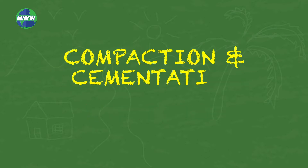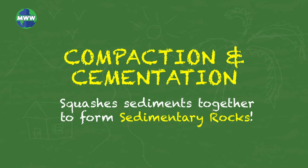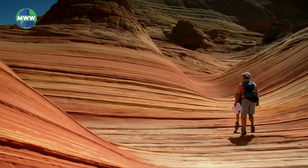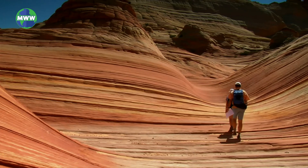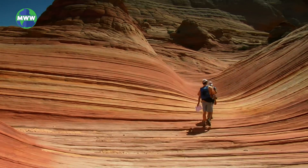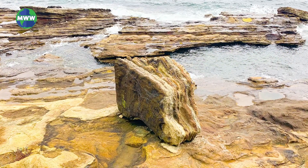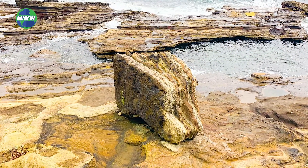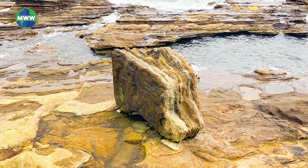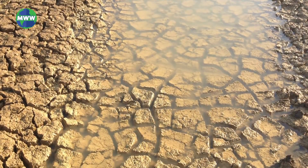Compaction and sedimentation squash them together to form sedimentary rocks. These types of rocks stratify, or layer, on top of each other. Most times sedimentary rocks form in water, and you can see ripple marks or mud cracks in their appearance.